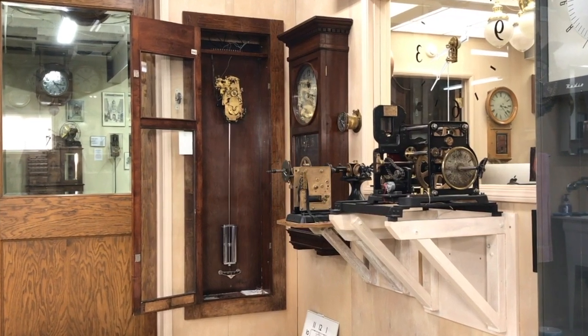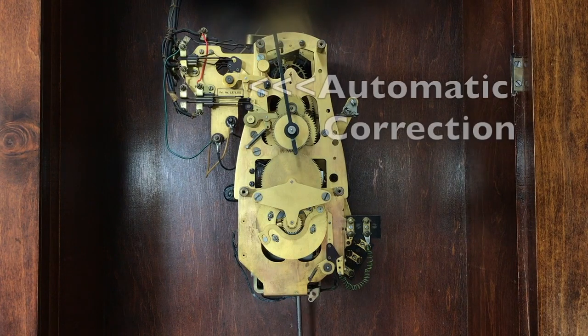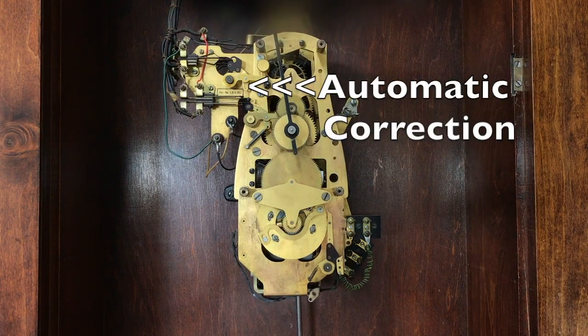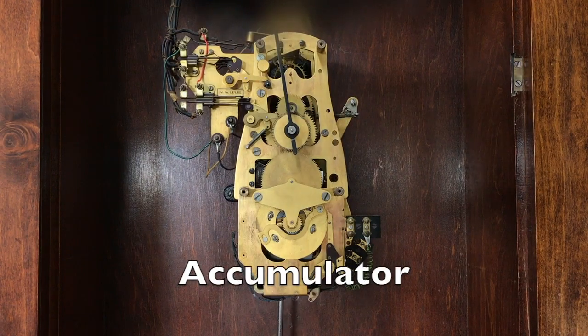A close look at this master clock movement shows the self-regulating levers and contacts are mounted on the left of the master clock movement. A few IBM master clocks were also equipped with an accumulator.